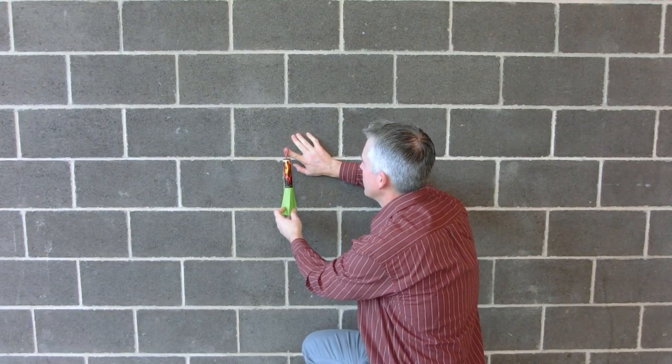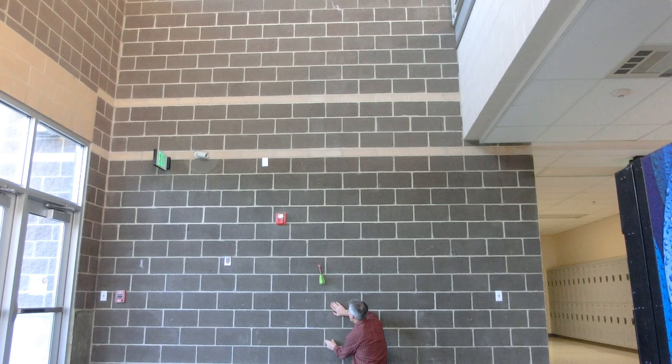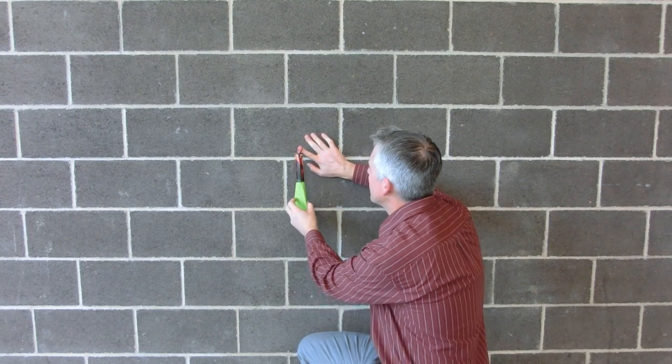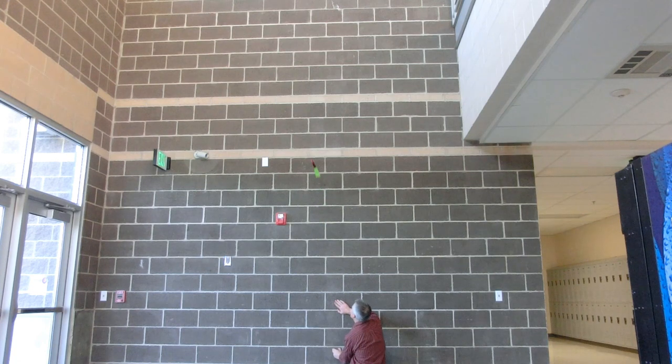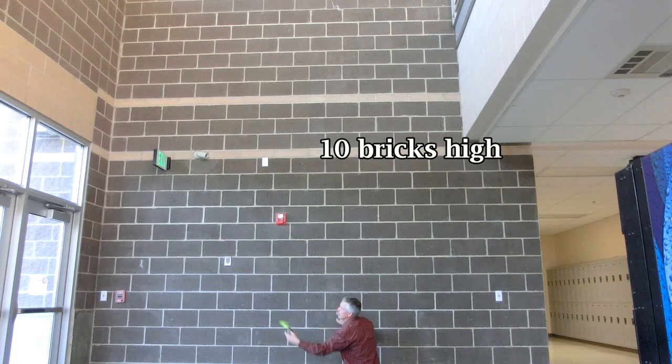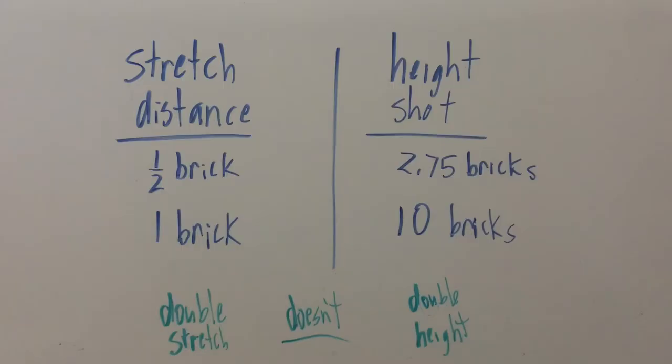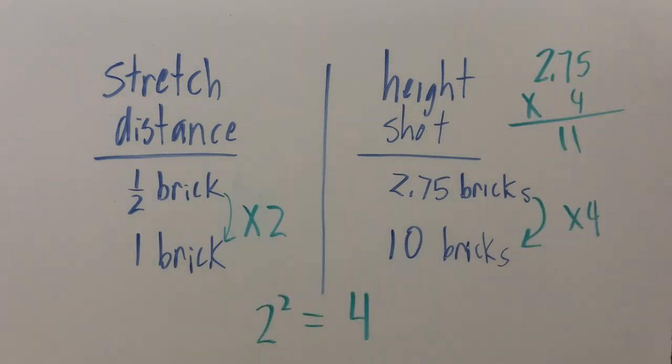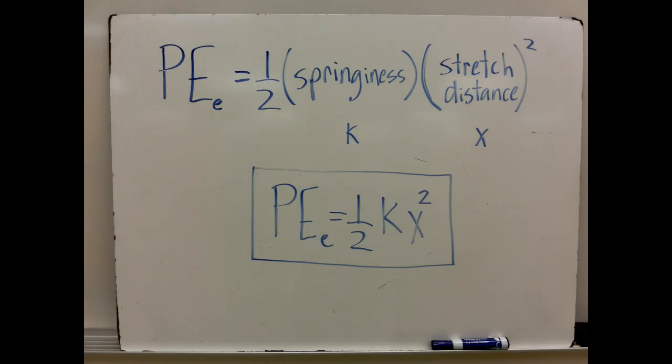We're going to take this finger rocket and stretch it down a half a brick and then launch it. And when we do, it goes up about 2.75 bricks. When we take the finger rocket and stretch it a full brick, or double the distance, it goes way up there about 10 bricks tall. So doubling the stretch distance does not double the height shot. It goes up by more than double. In fact, it's not even triple the height shot. Turns out that it's more like four times. Four times 2.75 would be 11, and if we imagine a little bit dissipated so we don't quite get up to 11, 10 seems about right. So squaring the stretch distance gives you four times a shot height. So that means our formula has to have a square in it for the distance: one half times the springiness times the stretch distance squared. K represents the springiness in the formula and X represents the stretch distance. So one half KX squared is the formula for potential energy elastic.